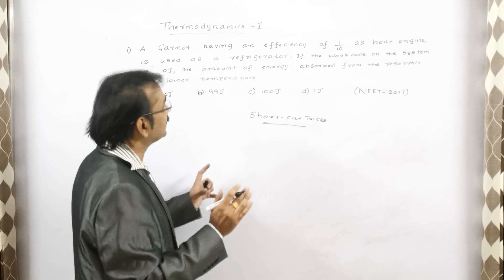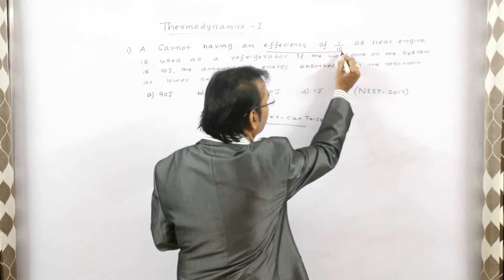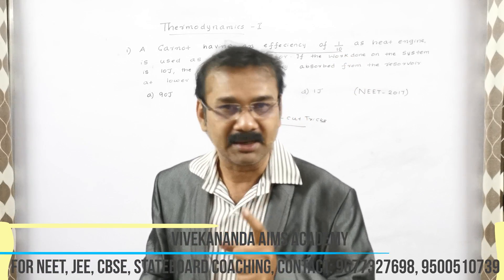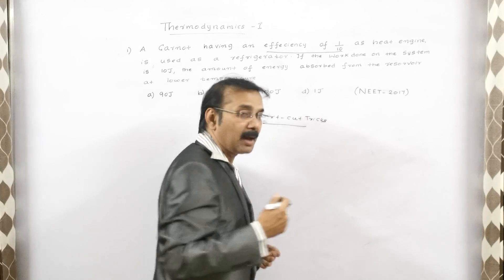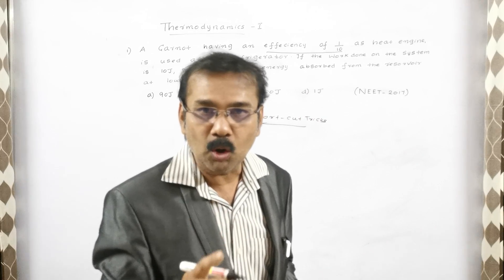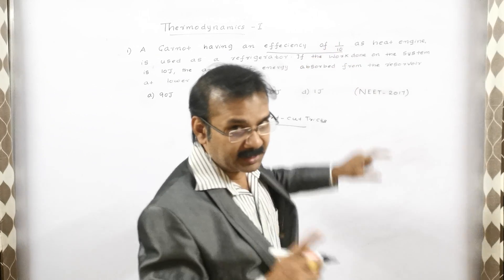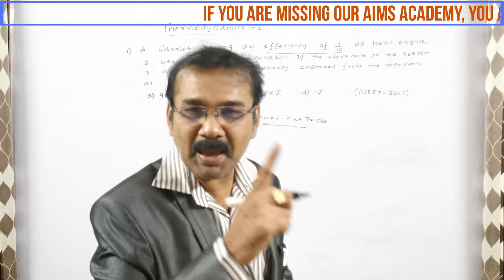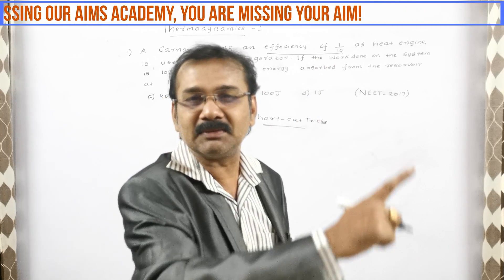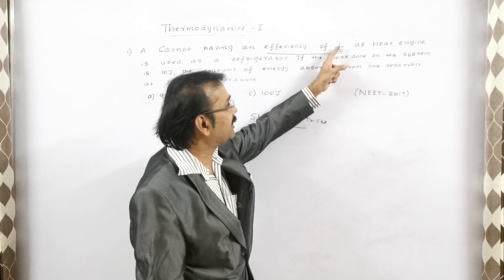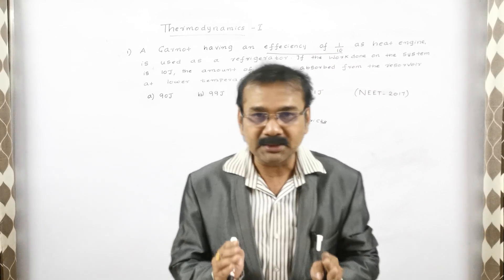The efficiency is the important point here. It is 1 by 10. Remember, my magical trick will work out only if there is a 1 in the numerator. If it is 1, use my magical trick and you will get the answer within a fraction of a second. So here, 1 by 10 — the numerator is 1.